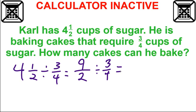Got divided by three-fourths. When I divide by a fraction, what do I do? Keep change flip. So the nine over two stays. Division changes to multiplication. Second fraction flips.